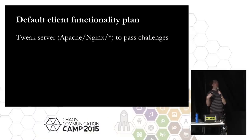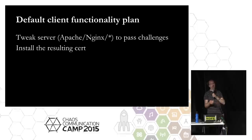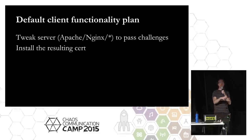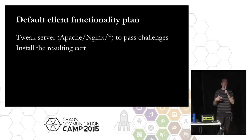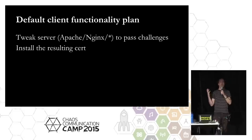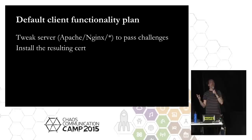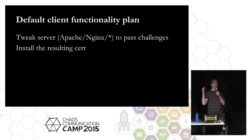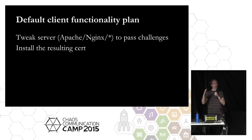So the default plan for the client is to go in, tweak your Apache or Nginx server to pass those challenges and make the shrubberies automatically, then install the resulting certificate in whatever server you have. Apache and Nginx are the ones we'll support at first, but we have a plug-in API so you can make a plug-in for any other type of server — whether it's Dovecot, Exim, Postfix, Qmail, your XMPP server, or anything that needs a TLS certificate. You can just write against our Python API and we'll drop the cert in for you.